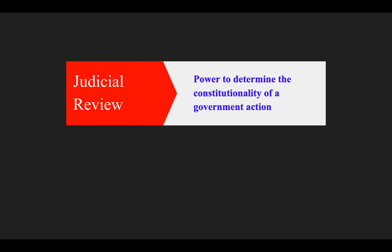While the federal judiciary is limited in the types of cases it can hear, the Supreme Court and the other federal courts have tremendous power in shaping federal laws through their court decisions. The federal courts have the ability to review questions arising under the Constitution, acts of Congress, executive orders, treaties of the United States, or any other action of the government — in a power that's known as judicial review. Judicial review is the power to determine the constitutionality of a government action — you can actually look at and determine whether something is doing what the Constitution says it's supposed to be doing.